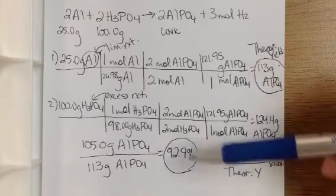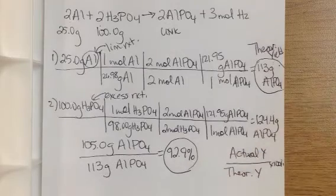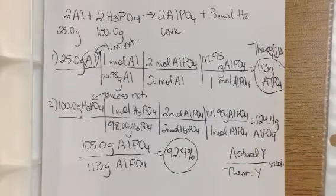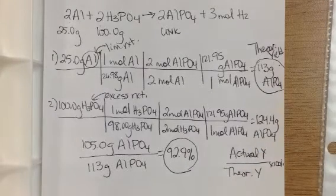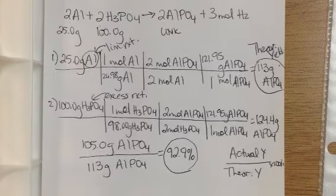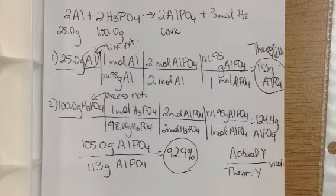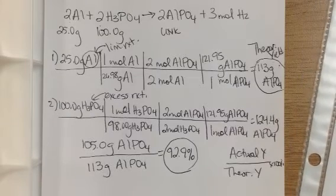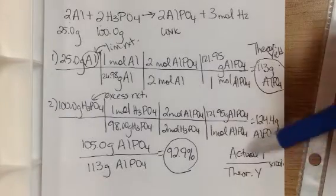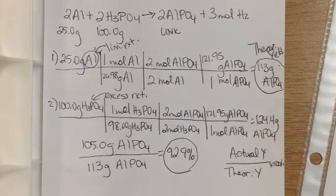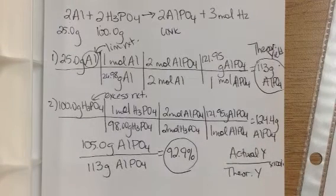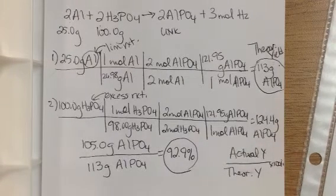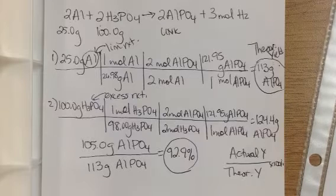So some factors that can make your actual yield be lower than your theoretical yield are things like competing side reactions, impure reactants, and reactions just simply not going to completion, like you just didn't let it react long enough. And by definition, because of what the formula is, the percent yield is simply the ratio of the actual yield to the theoretical yield expressed as a percentage.